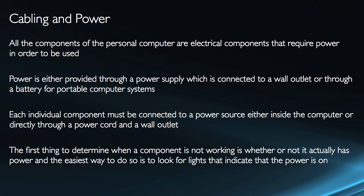All the hardware components in a personal computer are electrical components, and if they're electrical components, that means they require power in order to be used. Power is either going to be supplied through a power supply, and that power supply can be connected to a wall outlet or through a battery for portable computer systems. So desktops will have a power supply, and they must be plugged into the wall to receive the electricity required to power the system on.